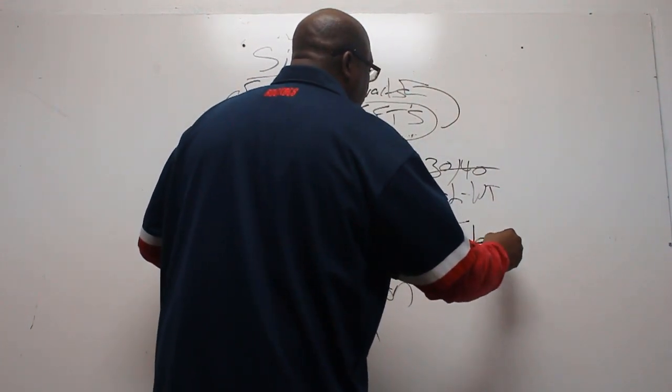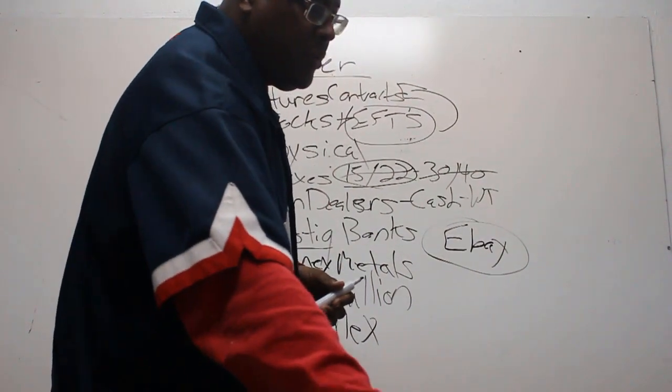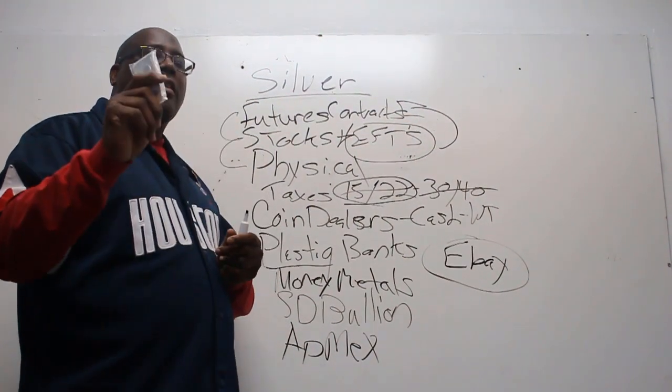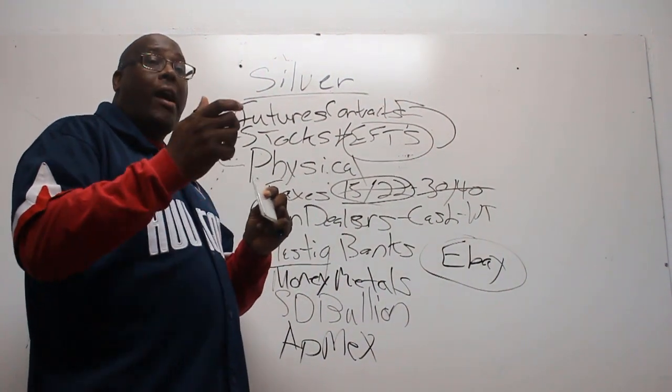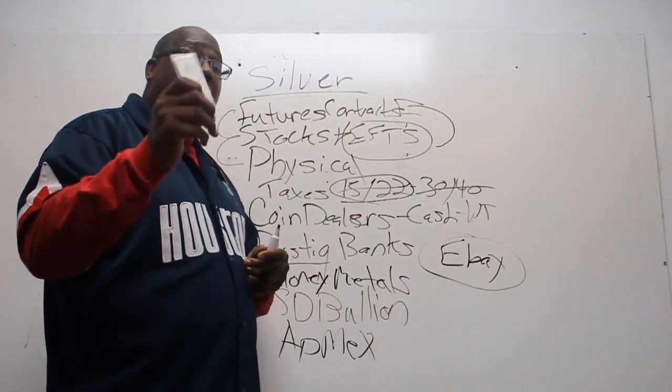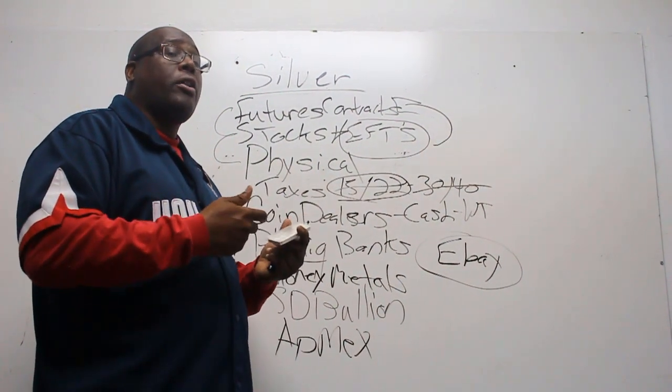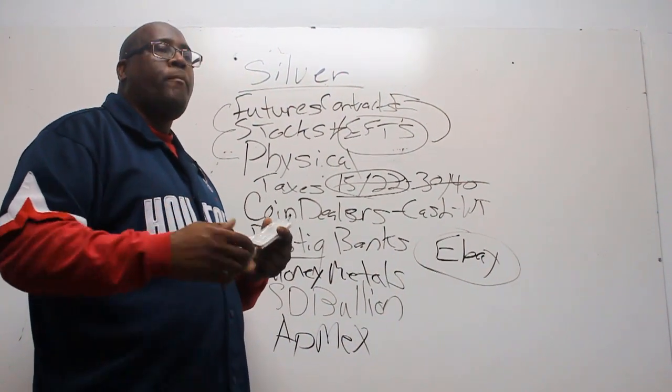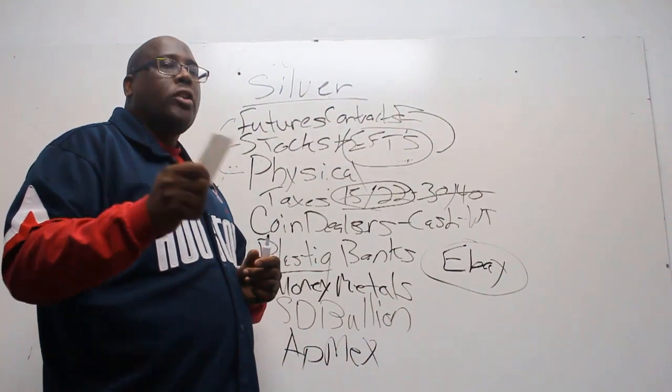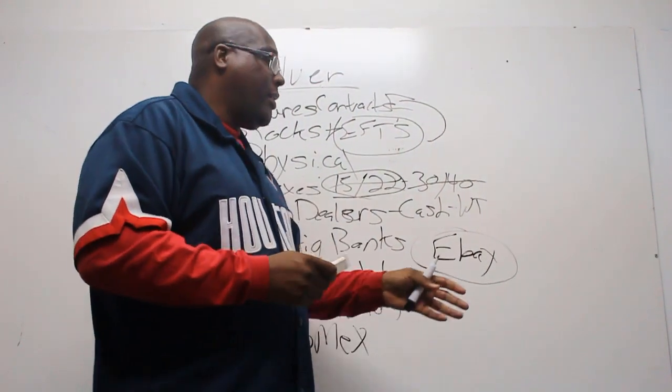One place that you have to be careful on is eBay. There are some people on eBay that will sell you stuff that looks the same or may look a little different. It may have the weight or be over the weight because they probably stuck some metal in there. It may have some silver in it, but it's not 99.9% silver, so you have to be careful when you're buying from eBay.